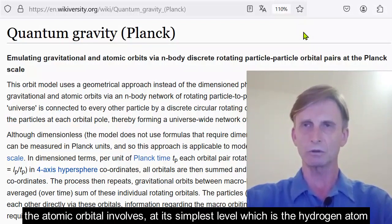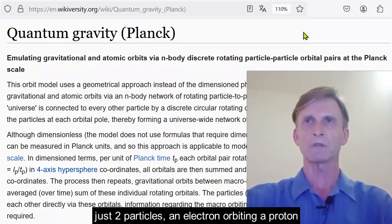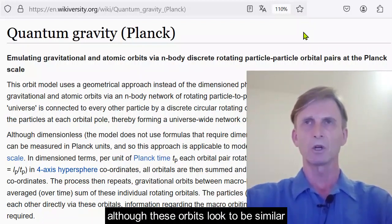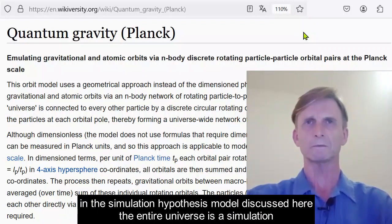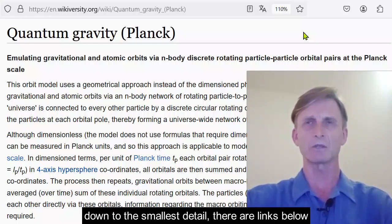The atomic orbital involves, at its simplest level, which is a hydrogen atom, just two particles, an electron orbiting a proton. Although these orbits look to be similar, a small body orbiting a large body, we are told they are not. In the simulation hypothesis model discussed here, the entire universe is a simulation down to the smallest detail.